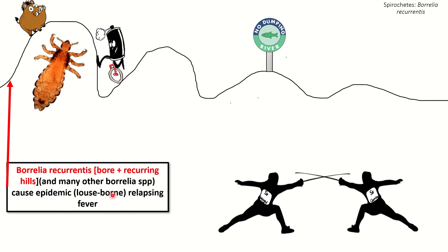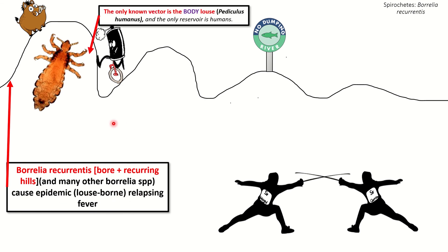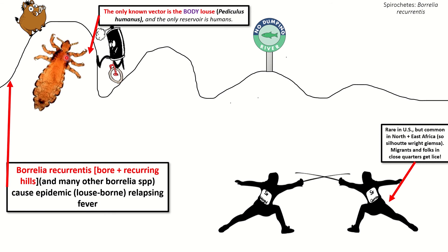It causes epidemic or louse-borne relapsing fever. The only known vector is the body louse, Pediculus humanus, and the only reservoir is humans. That's represented here by this Pediculus humanus bug, which is an actual representation of it. It's quite rare in the U.S., but more common in North and East Africa. We're representing a silhouette with the right Giemsa stain to represent the darker skin tones apparent in North and East Africa, and the Giemsa stain because you can see spirochetes on it.